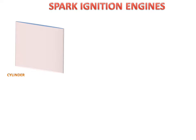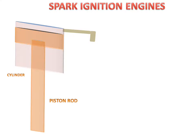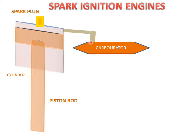Firstly, the parts of the spark ignition engine: we have a cylinder with a piston, piston rod, and connecting pipe. There is a spark plug for generating spark, and a carburetor, which takes air from the atmosphere and fuel from the fuel tank, mixes them in a proper amount, and supplies the mixture to the engine cylinder.